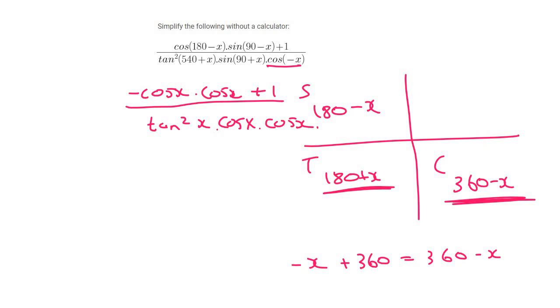Okay, now I would simplify a little bit. At the top, you can multiply these two cosines together. So that's going to be negative cos squared x plus 1. At the bottom, you could write tan squared as sin squared over cos squared. And then these two together will be cos squared.